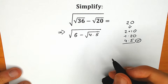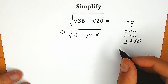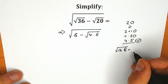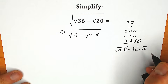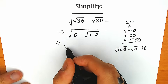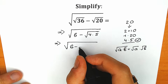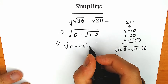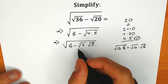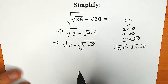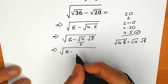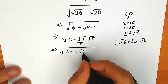Right now we need to remember a really great square root property: whenever you have square root of a times b, you can split it as square root of a times square root of b. Let's use this property here. So we have square root of 6 minus square root of 4 times square root of 5. But square root of 4 is equal to 2, so we write square root of 6 minus 2 times square root of 5.